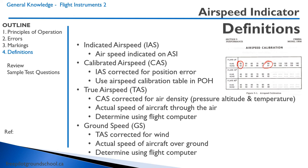Ground speed is the true airspeed corrected for wind — it is the actual speed of the aircraft over the ground. We will use a flight computer to calculate ground speed during your navigation lesson.